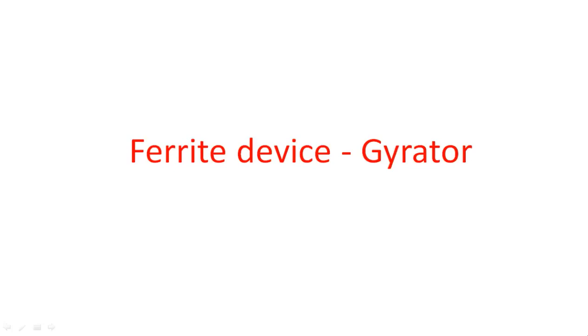Hi everyone. In this video I am going to start with a ferrite device called the gyrator. There are generally three types of ferrite devices available: gyrator, isolator, and circulator. These three are ferrite devices where ferrite magnetic material has been used inside the waveguide to rotate the electric field.